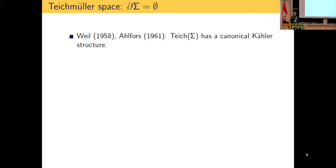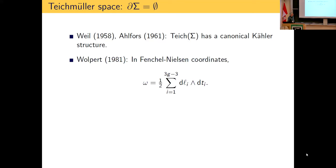Concerning the symplectic structure: in early days people studied the Riemannian and complex structures and later discovered they're compatible, so Teichmüller space in finite dimensions has a canonical Kähler structure. Then in 1981, Wolpert suddenly discovered that in Fenchel–Nielsen coordinates the symplectic structure is as simple as can be: it's just ∑ dlᵢ ∧ dτᵢ (up to the conventional factor of 1/2). It couldn't possibly be any simpler.